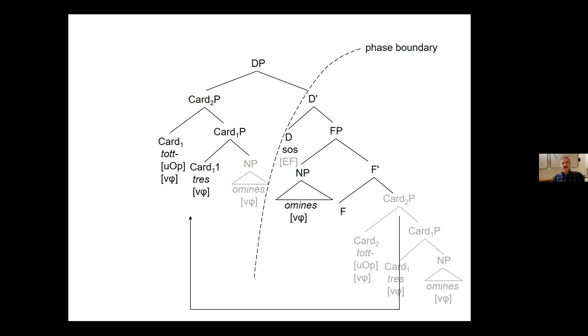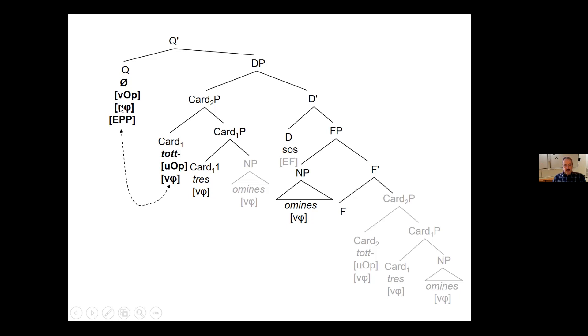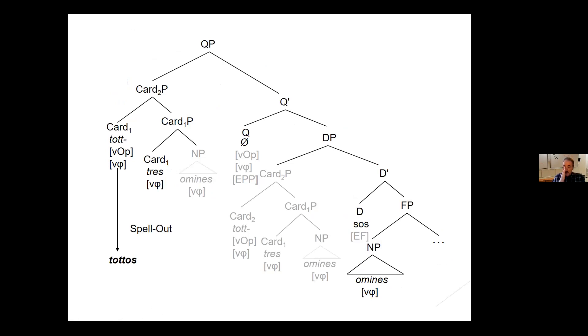Now, in principle, the structure would be complete. But then I assume that we have the QP. And here, this is the probe, which now probes and finds the valued phi features of TOTTO. And the EPP feature generates a specifier position and then it moves. Later, this whole thing is in the specifier and this TOTTO guy has valued features and is spelled out as TOTTO. So it agrees.